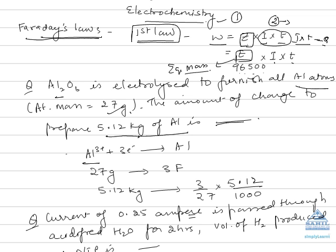When alumina is electrolyzed, Al³⁺ gains three electrons to form aluminum. One mole of electrons means one Faraday, so three moles of electrons means three Faraday. 27 grams of aluminum uses three Faraday of electricity. Therefore, 5.12 kg of aluminum uses 3/27 × 5.12/1000, and we can easily calculate the amount of electricity consumed during electrolysis.